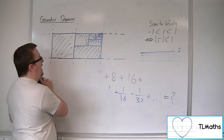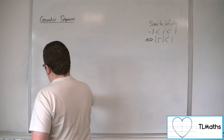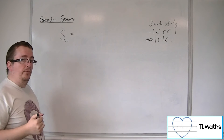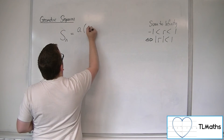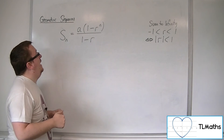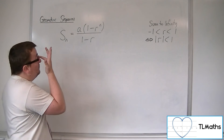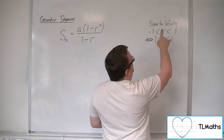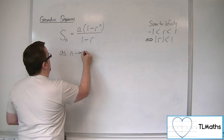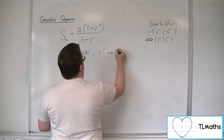We want some way of finding the sum to infinity. We have a way of finding the sum to n terms for a geometric series: S_n equals a times (1 minus r to the n) over (1 minus r) — you could also write it as a(r to the n minus 1) over (r minus 1). Now, if the modulus of r is less than 1, as n gets larger and larger, r to the n gets smaller and smaller.